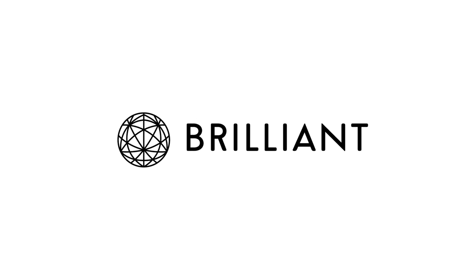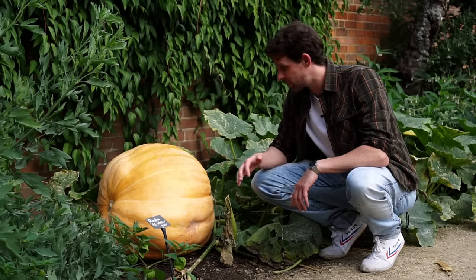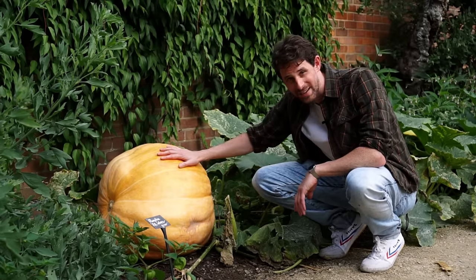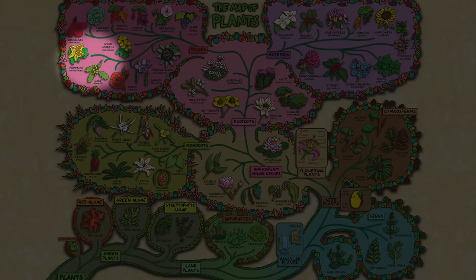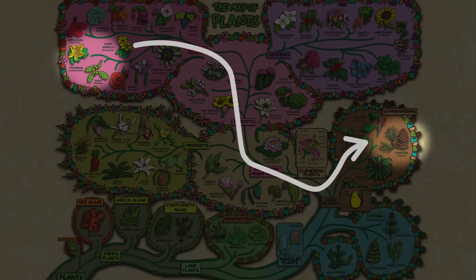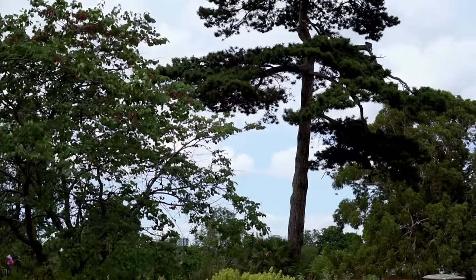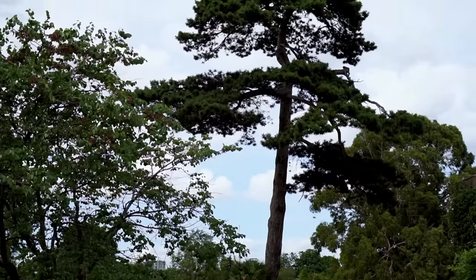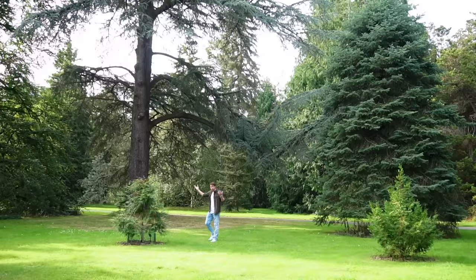This video is sponsored by Brilliant. Did you know an oak tree is way more closely related to a pumpkin than they are to pine trees? Look, here are the oaks next to the pumpkins and here are the pine trees all the way over here. Before I made this map I thought that all of the trees evolved from each other, but it turns out the concept of a tree has evolved throughout history multiple times.